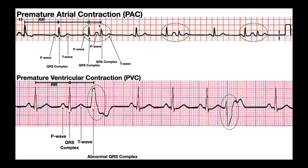We'll start off with the premature atrial contraction, and I want to start by just following the cardiac cycle. We're going to see some normal cardiac cycles, but then we're going to be interrupted by a premature P wave. So we look over here on the far left — here's a P wave, here's a QRS complex, and then right here we see a smaller QRS complex.